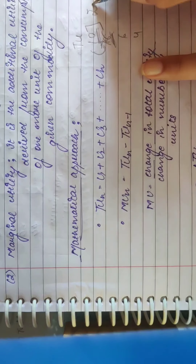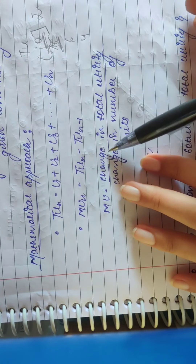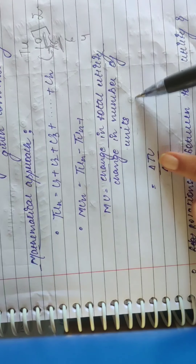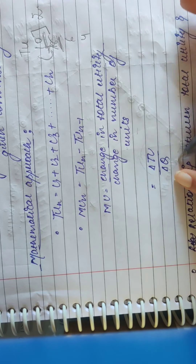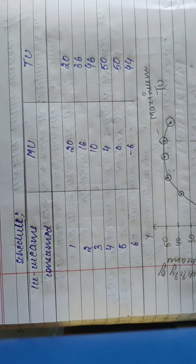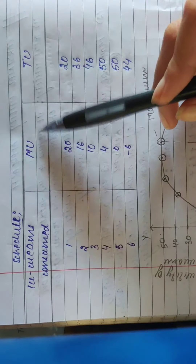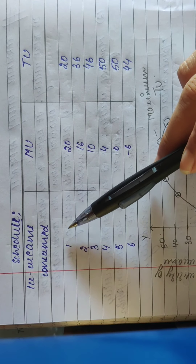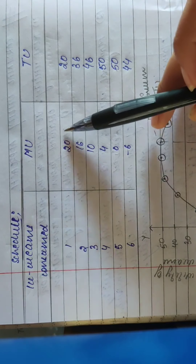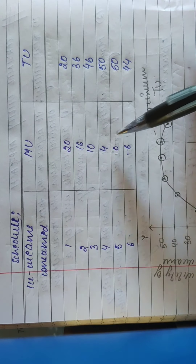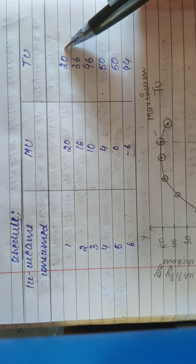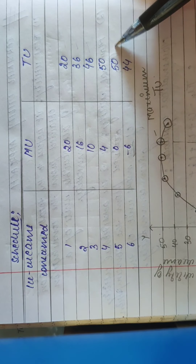The second MU formula is: change in total utility divided by change in number of units. Let's look at the relationship between total utility and marginal utility using a schedule. In the schedule, we have ice creams consumed from unit 1 to unit 6. Marginal utility values are 20, 16, 10, 4, 0, and −6. Total utility values are 20, 36, 46, 50, 50, and 44.